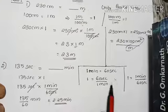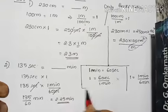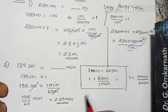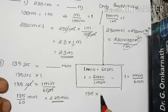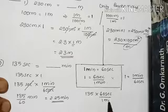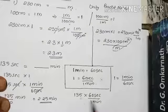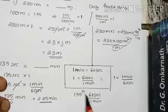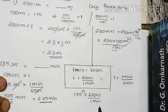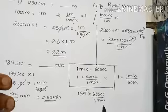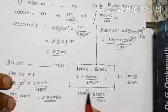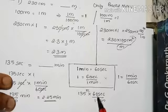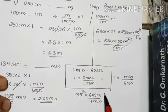Why not multiply by 60 seconds / 1 minute instead? Because then seconds appears in the numerator, giving seconds squared per minute — which is not the required unit. I need only minutes in the answer, so seconds must be in the denominator and minutes in the numerator.